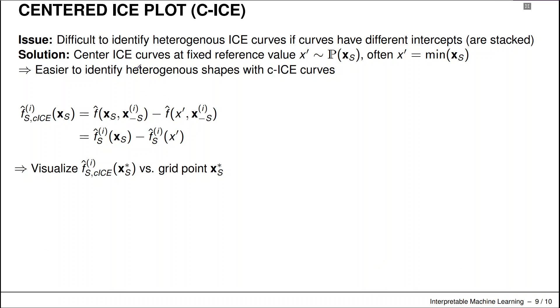So for centered ICE curves, we pick a fixed reference value. So some x dash value, often that is the minimum value of our feature of interest. And now we simply shift the ICE curve plot by that fixed value.